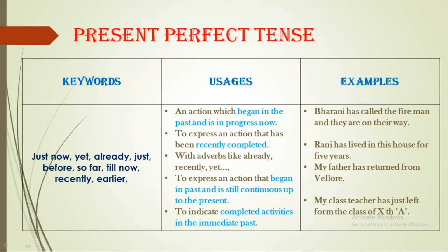These are the keywords we have to use for making a sentence in present perfect tense. The keywords are: just now, yet, already, just before, so far, till now, recently, earlier. These are the keywords about present perfect tense.